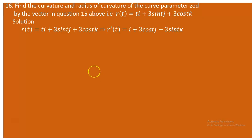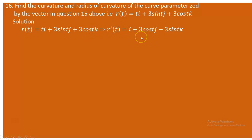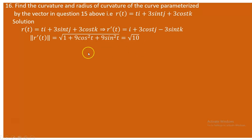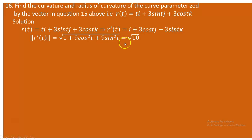We need to find the derivative of r(t). The derivative r'(t) is: i + (-3cos(t))·j + (-3sin(t))·k. Once we obtain this, we compute the magnitude of this vector: the square root of the sum of the squares of the components, which is 1² + (-3cos(t))² + (-3sin(t))², giving √(1 + 9cos²(t) + 9sin²(t)).